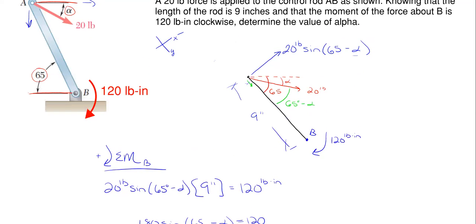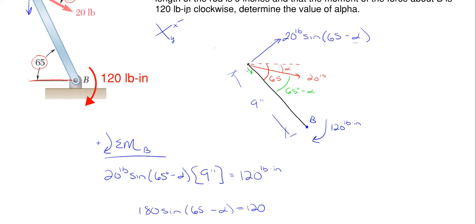So what that means is that this angle up here has to be 23.19 degrees for this 20 pounds, such that the rotation about point B will be 120 pound inches of moment's rotation.